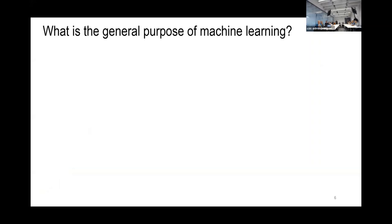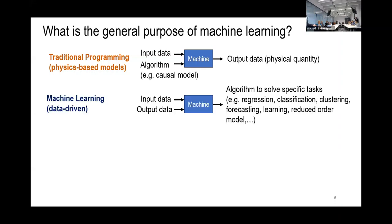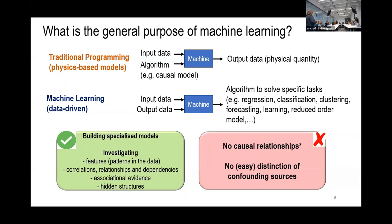What is the general purpose of machine learning? In traditional programming, we have input data and an algorithm — a causal model — and we get an output, usually a physical quantity. Machine learning instead takes the input and the output as inputs to the machine, and what comes out is an algorithm. This algorithm is very useful for classification, regression, and learning things from data. But we have to think about when it is useful and when it might not be.